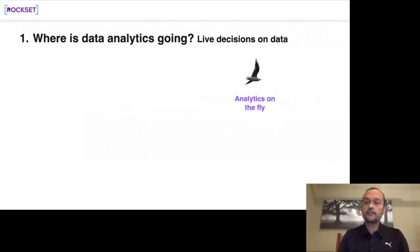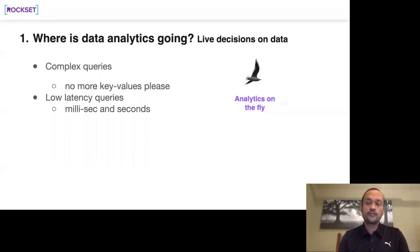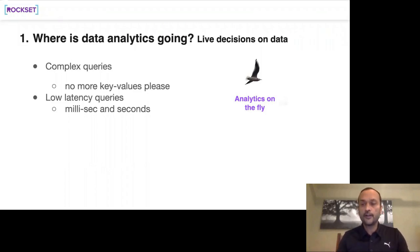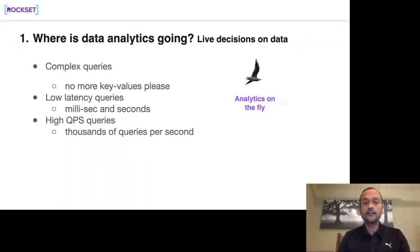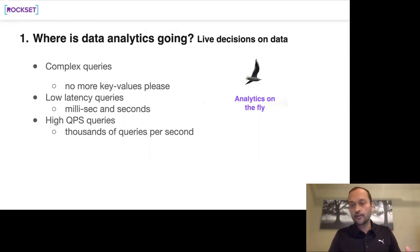Traditional analytics has been mostly about warehouses and standard reporting. Rockset does analytics on the fly — it's a SQL system, not a key-value store, meaning it does aggregations, joins, sorts, and order-bys, while keeping query latency low, not many minutes. It also targets high QPS, meaning it can be a user-facing analytical database where thousands of queries come in simultaneously. This differs from traditional OLAP workloads with only a few concurrent queries per second.